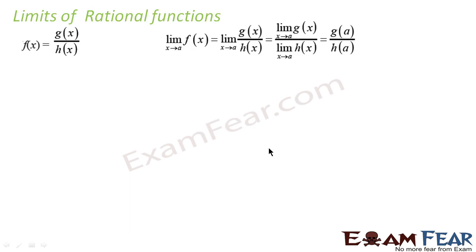Now we'll study limits of a rational function. Let there be a rational function f(x) equal to g(x) by h(x), where h(x) is not equal to 0. So if we want to find the limit of f(x), that is g(x) by h(x), we can say this is nothing but the limit of g(x) by h(x). We know that limit of g(x) by h(x) equals limit of g(x) by limit of h(x), from the algebra of limits.